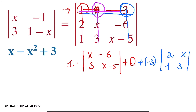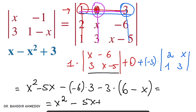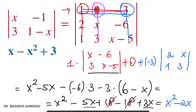Now we simplify all the terms. The determinant of that first minor is x squared minus 5x, minus minus 6 multiplied by 3. Then minus 3 multiplied by 6 minus x. Opening up the brackets, we get x squared minus 5x plus 18 minus 18 plus 3x. The 18s cancel, and minus 5x and 3x partially cancel, giving us x squared minus 2x on the right-hand side. That's the determinant of the 3x3 matrix.